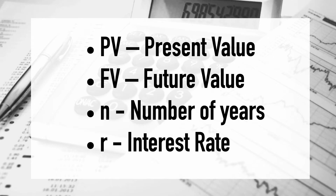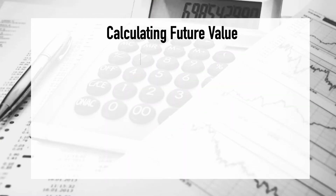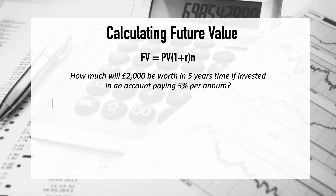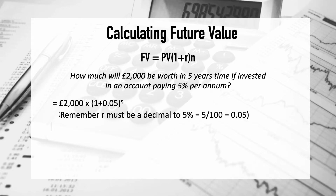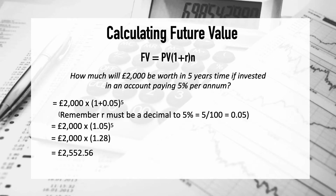Here's the formula for calculating the future value — how much is an X amount worth in X number of years. So grab your calculators. For example: how much will £2,000 be worth in five years' time if invested at 5% per annum? We're assuming a fixed rate of 5% every year for five years. Pop all the figures into the formula — remember to convert the interest rate to a decimal — and the answer is £2,552.56. That's how much £2,000 will be worth in five years' time.